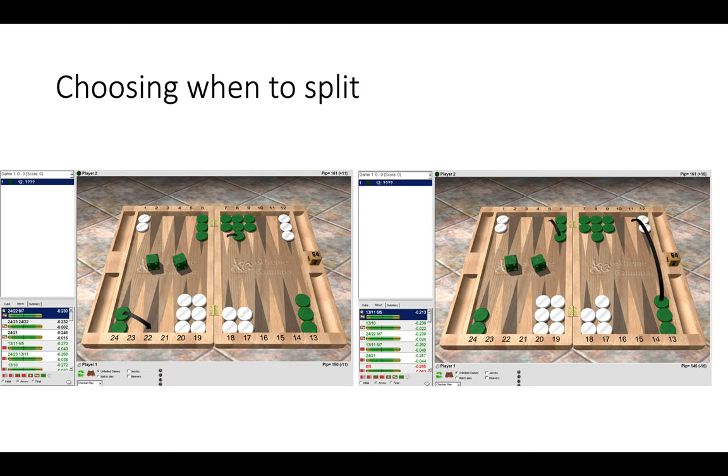So in the position on the left, green has split with the 2, 24-22. And that's because white's 8-point and 7-point are frozen. So you can see that the three best moves on the position on the left are all splitting plays.